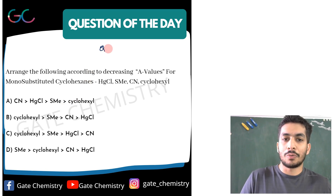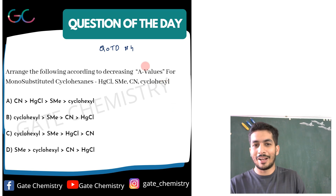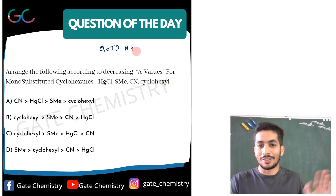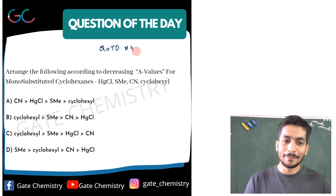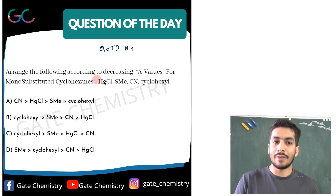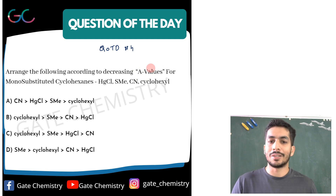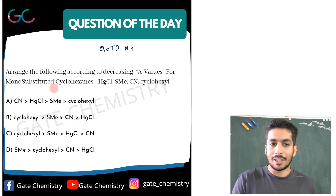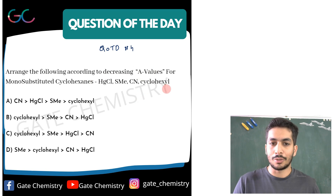This was QOTD (Question of the Day) number four — nearly six months after the third question, which was sometime in June 2021. Anyway, the question says: arrange the following according to decreasing A-values for monosubstituted cyclohexanes. A-values are specifically used for monosubstituted cyclohexanes, so that part of the statement is more or less redundant.